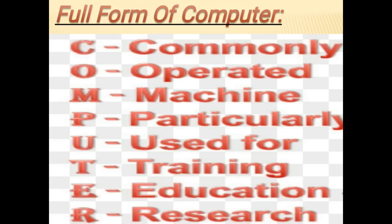The full form of computer is: C stands for Commonly, O stands for Operated, M stands for Machine or Mechanical, P stands for Particularly, U stands for Used for, T stands for Training, E stands for Education, and R stands for Research.